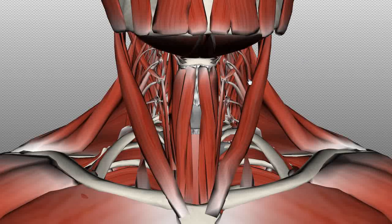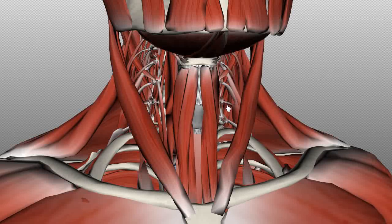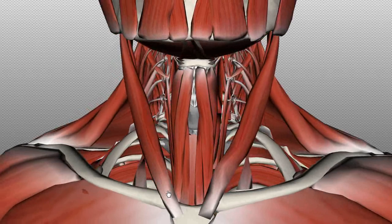Now I'm going to talk about the infrahyoid muscles. They've got the opposite action to the suprahyoid muscles — they depress the hyoid bone. There are four muscles in the infrahyoid group, and they are referred to as strap muscles because they look like straps.